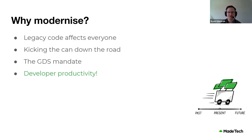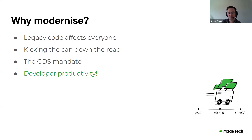Legacy code affects everyone. It affects your senior stakeholders — that slow delivery cadence and risk aversion make it extremely difficult for them to empower their teams to achieve strategic goals. It affects your software delivery teams, turning what's normally a fun creative process into a nightmare, especially when you're under pressure to deliver. And it affects your end users, who suffer from slow release cadence, buggy software, and software they can't rely on — affecting both internal staff and citizens using public-facing services.